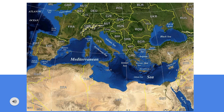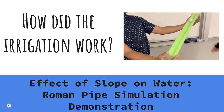In order to have control of these lands, they had to have control of the water, as they needed to support the masses. To demonstrate how Romans utilized slope and gravity in their pipes, the pool noodle will act as the pipe and the ball of Play-Doh acts as the water. The Play-Doh is able to roll down the pool noodle because it is at a slope and is able to travel with the help of gravity.